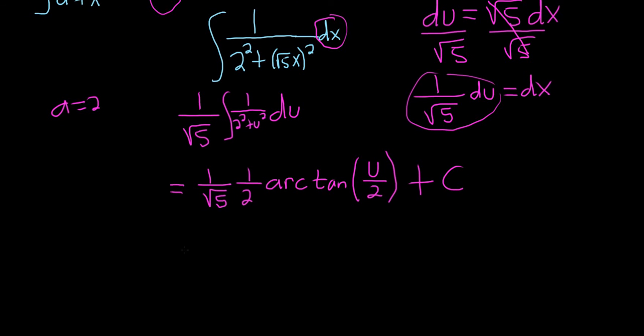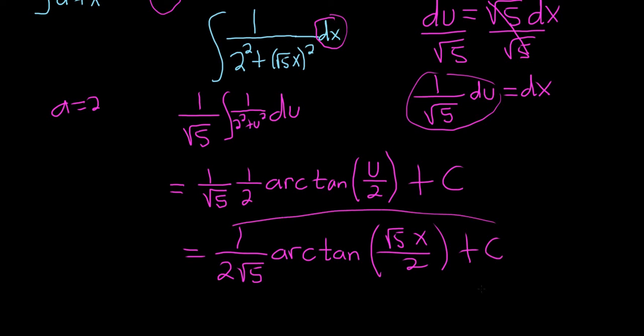Now the last thing to do is replace u with what it was. So this is 1 over, I'm going to write it like this, 2 square root of 5, just so there's no confusion where the 2 is. Sometimes people will extend the square root symbol here, so it looks like the 2 is in the square root. You want to make sure that it's clear that it's not. And then u was the square root of 5 times x, that's from before, over 2 plus capital C. And that is the final answer.